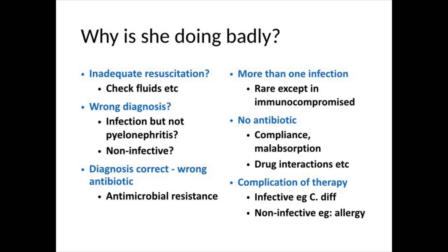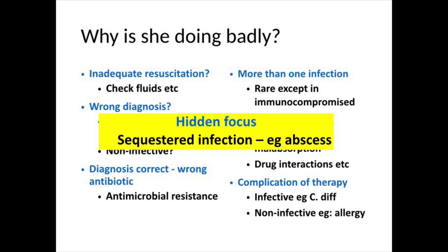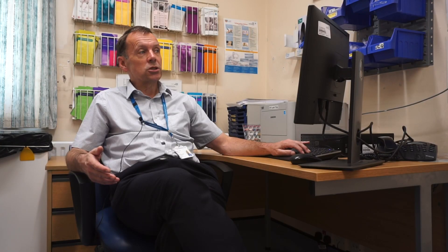Have we got the correct diagnosis but the wrong antibiotics — has she developed antimicrobial resistance? That can develop quickly, but we're only 48 to 72 hours in and blood and urine cultures show a sensitive organism. Could she have more than one infection? That's uncommon unless the patient is immunocompromised. Are we failing to deliver antibiotics? That's a common cause of failure in outpatient settings, but she's on intravenous antibiotics. Could there be a complication like Clostridium difficile or an allergy? That's early in her course. All of these are possible but unlikely. The most likely cause is a hidden focus — a sequestered infection such as an abscess.